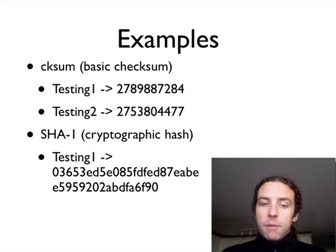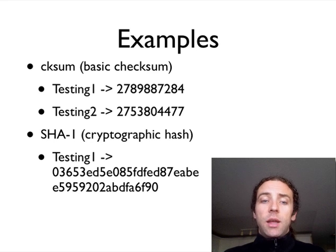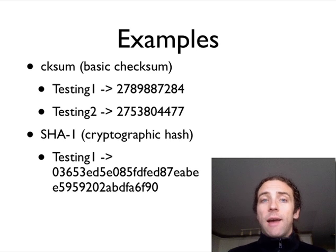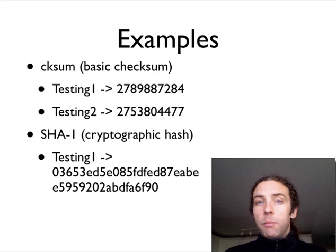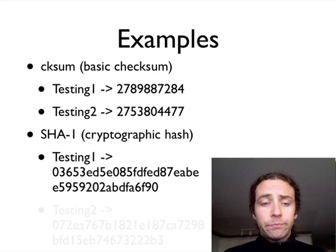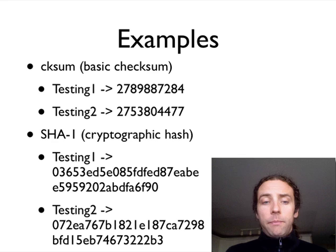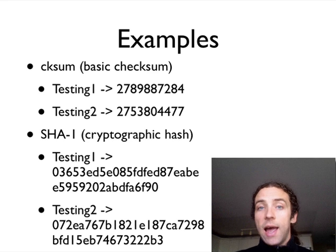In the SHA-1 example, the output is much larger. Effectively, the bigger the hash is, the less likely it is for you to have what's called a hash collision, which is where multiple different pieces of data have the same hash. If you have more numbers, you can just have more different numbers, and this is important for cryptography. As you can see, these two inputs, while only very subtly different, produce completely different hashes.